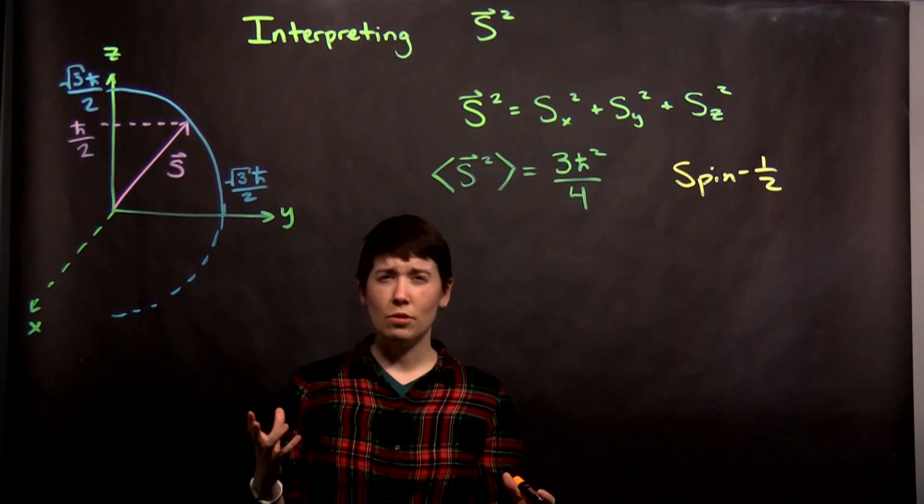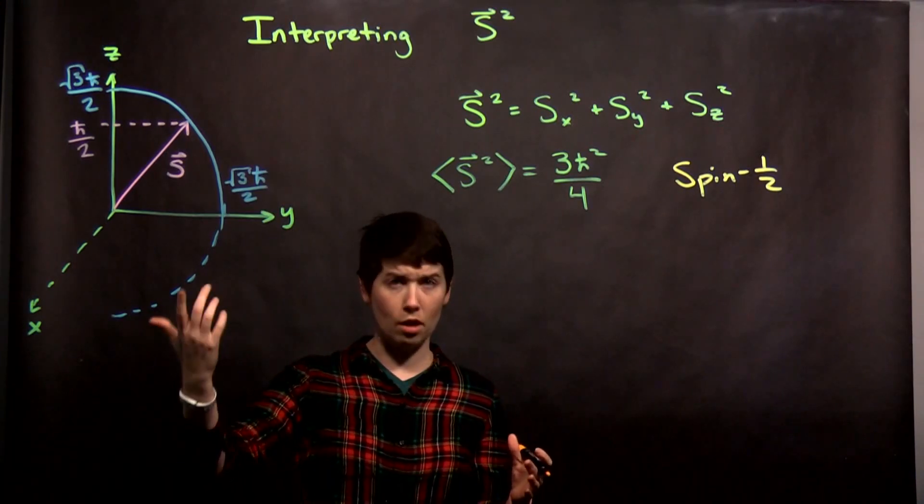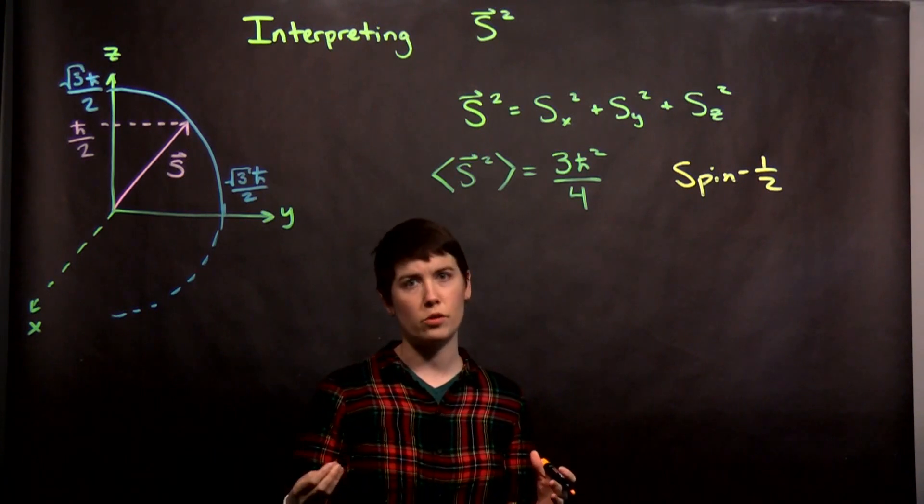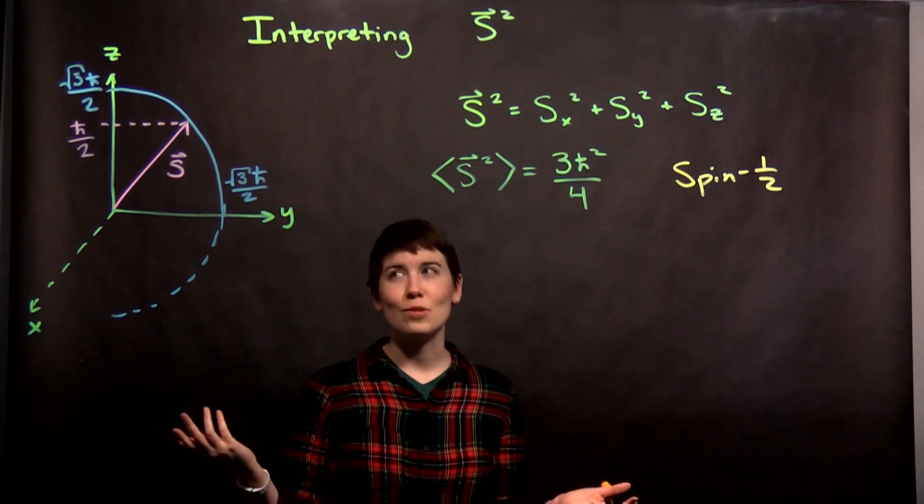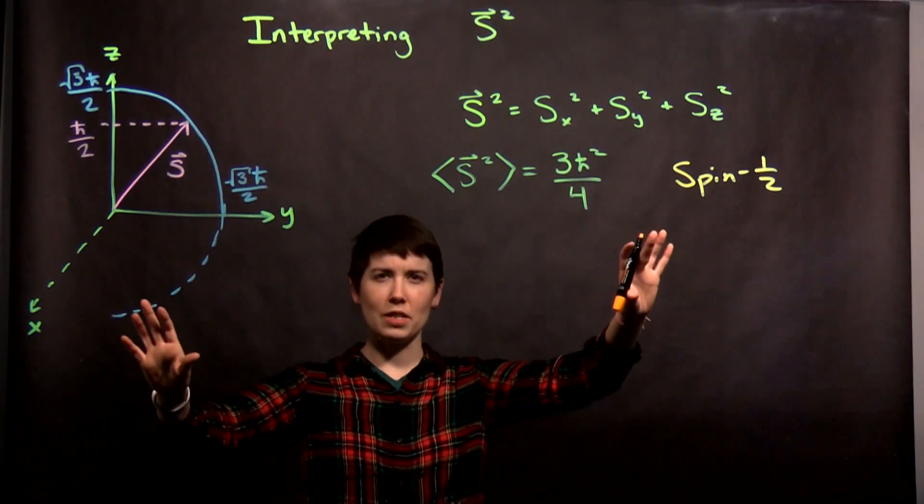So this is a little bit difficult to understand because there really isn't a classical situation that operates this way. This is a very fundamentally quantum mechanical situation and that's part of why we start with spin. So again, we can try to interpret spin as a vector here.